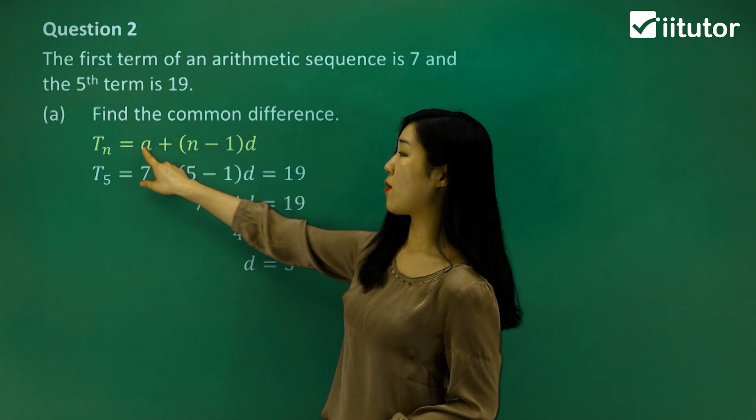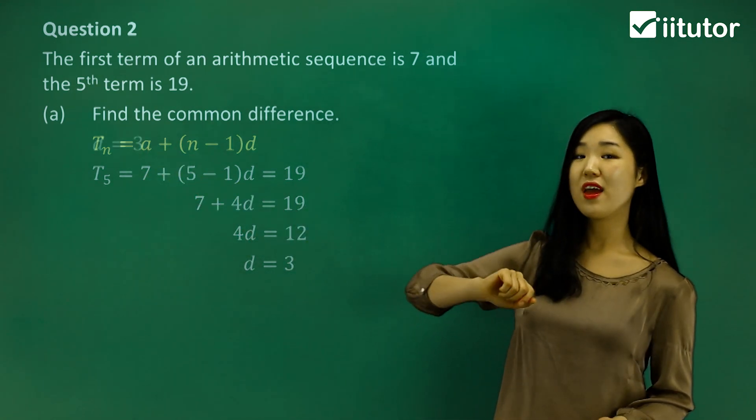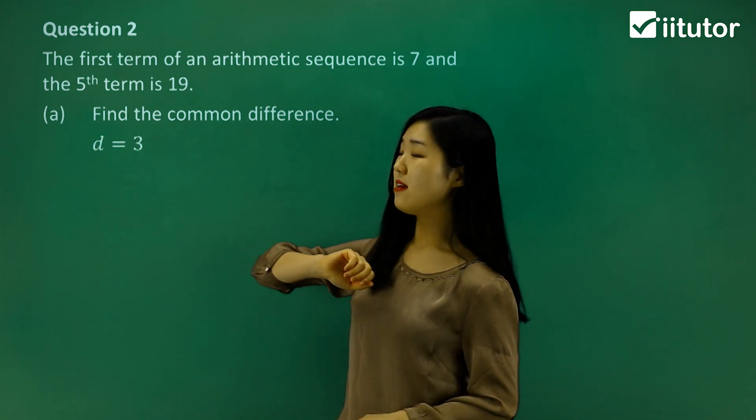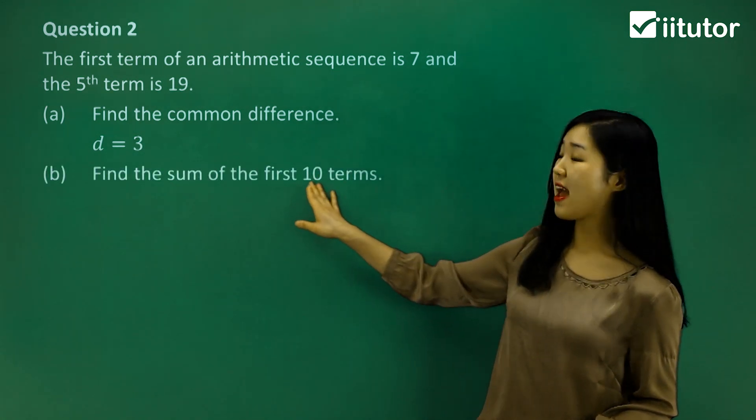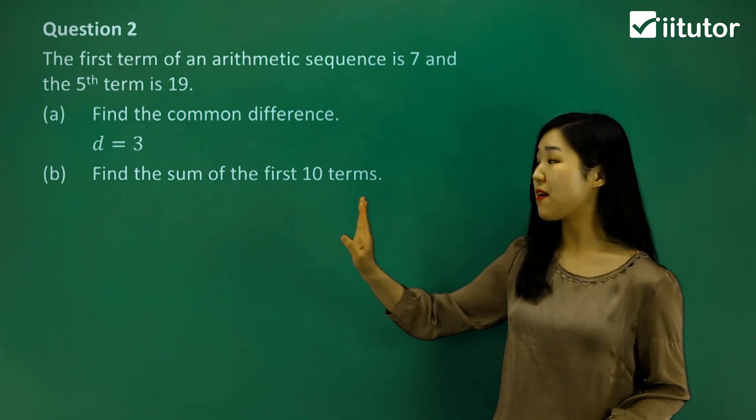But make sure you know that we're going to be using the Tn formula. Now, so d is 3, I'll just leave that there. Let's move on to part b. It says find the sum of the first 10 terms. So this time, we want to find the sum.